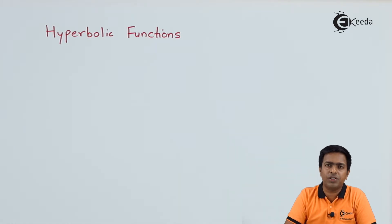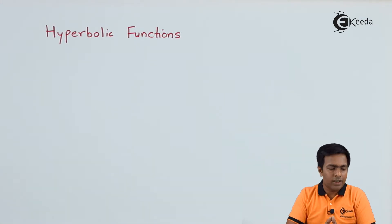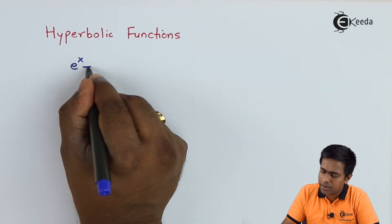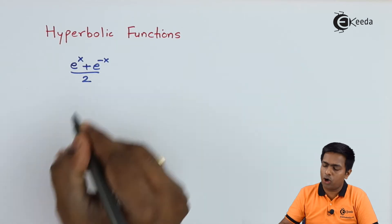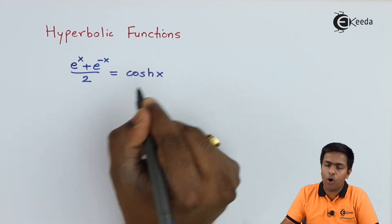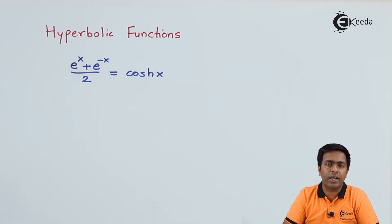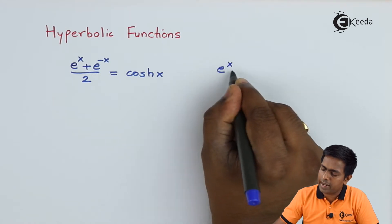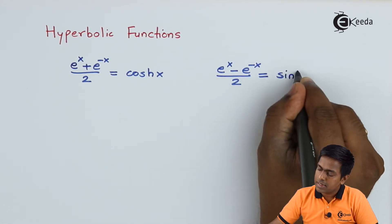When we learn the trigonometric function, which is also called the circular function, we have seen that it has a relationship with a circle. Similarly, hyperbolic functions have a relation with a hyperbola. If x is a real or complex number, then e to the power x plus e to the power minus x, divided by 2, denotes the hyperbolic cosine of x. Similarly, hyperbolic sine of x is e to the power x minus e to the power minus x, divided by 2.